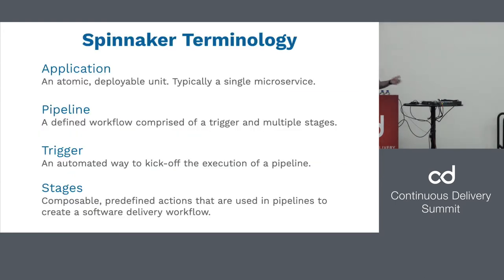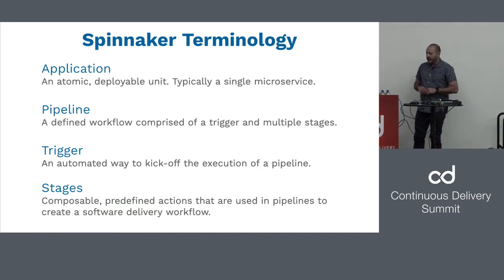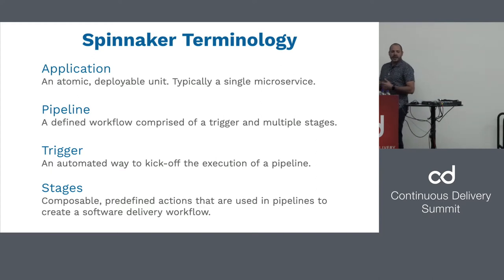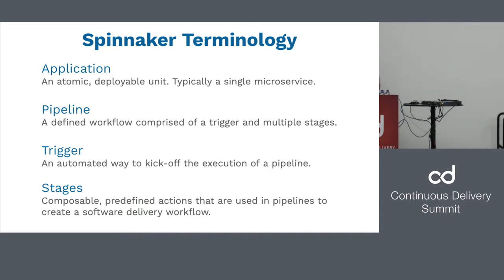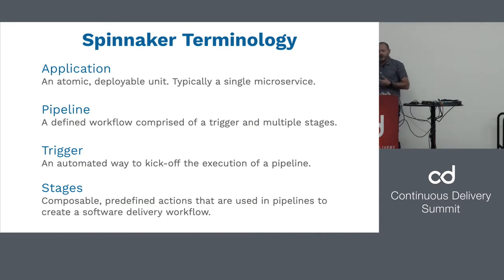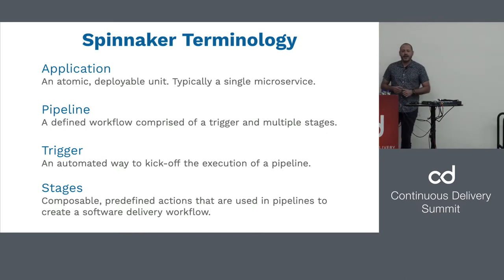But let's go through some terminology first, because ours is slightly different. Spinnaker is an application-centric platform, not an infrastructure-centric platform. If you go into the AWS console or a Kubernetes console, it tells you all the nodes or pods running. But if you're an application developer, you really only care about your application — everything else doesn't matter to you. So everything in Spinnaker starts with the application, which we refer to as an atomic deployable unit, typically a microservice.